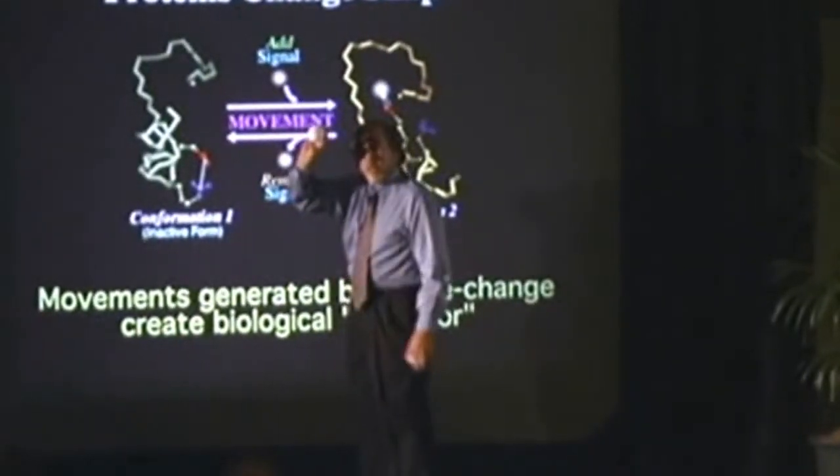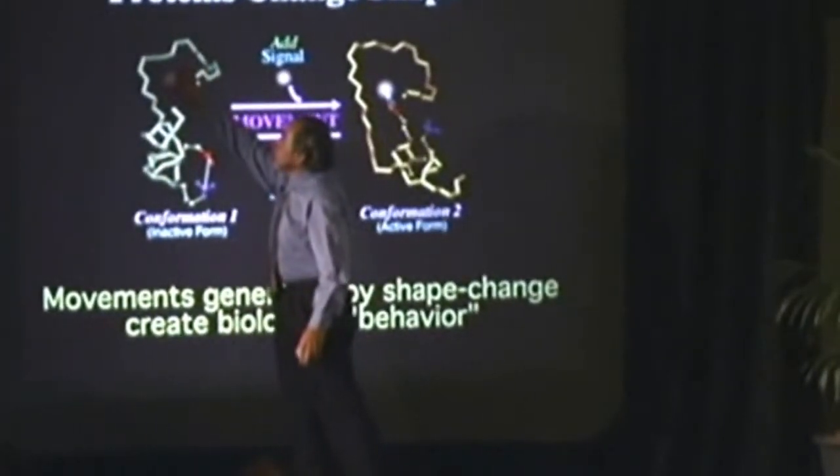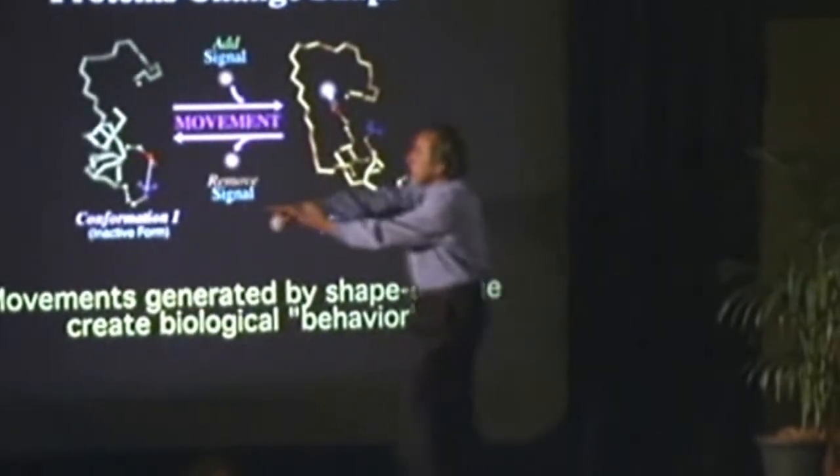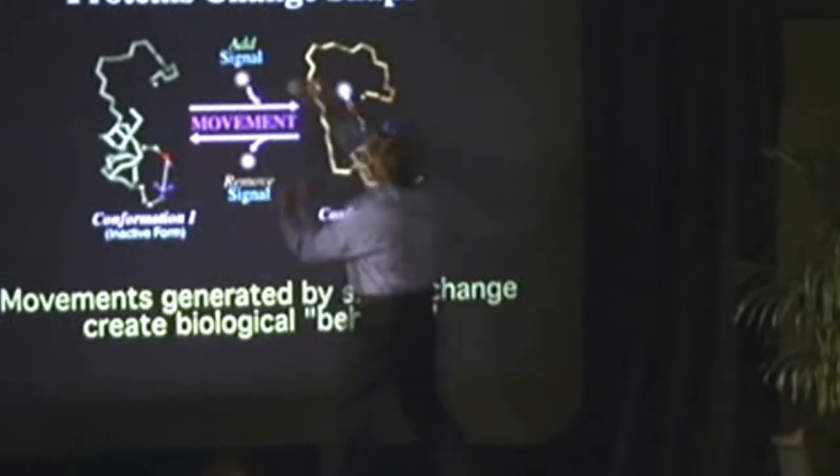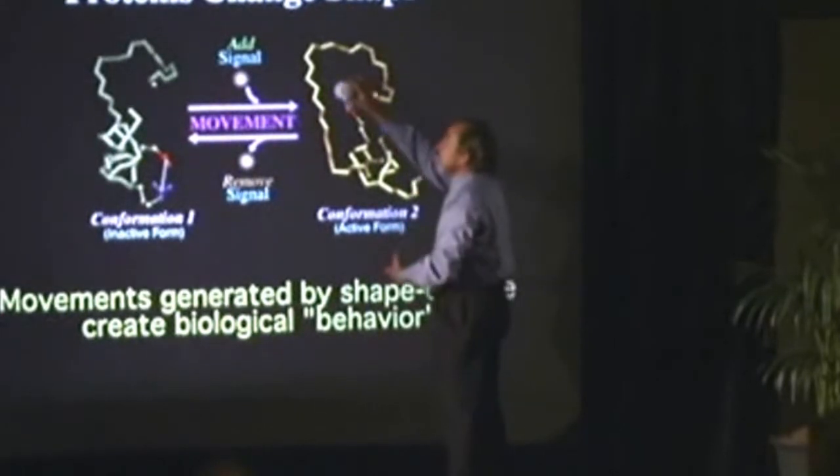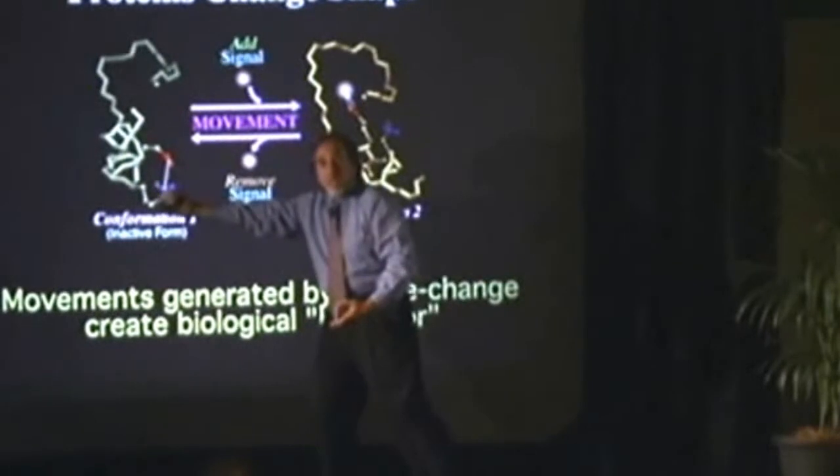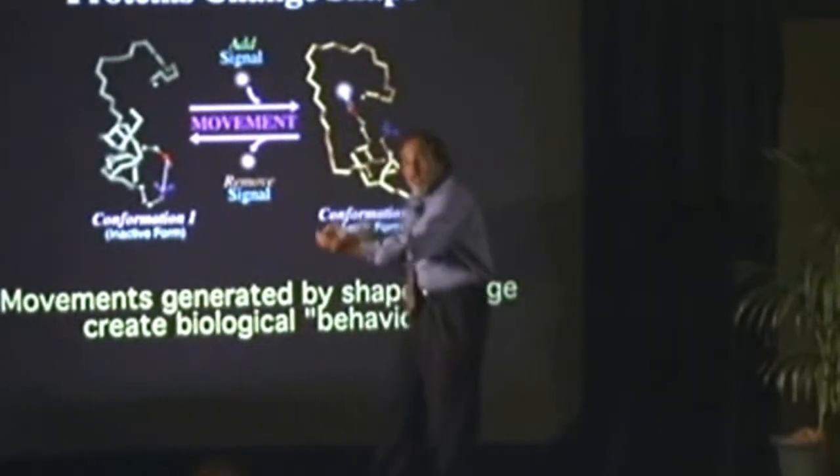The signal is calcium. When calcium shows up, it plugs into the hole, it changes the charge, and it causes the protein to change its shape from this inactive form, conformation one, shape one. When I add the signal, it goes to shape two, the active form. If I take the signal away, then the protein goes back to the resting state. So there are two different shapes to the protein, an active and an inactive form.